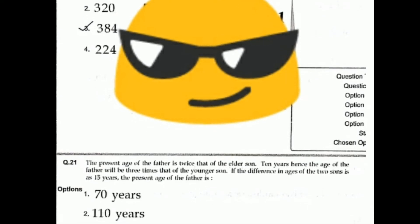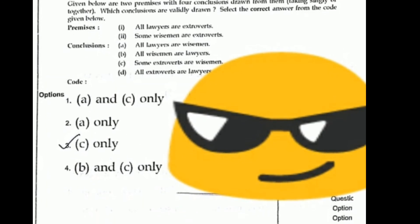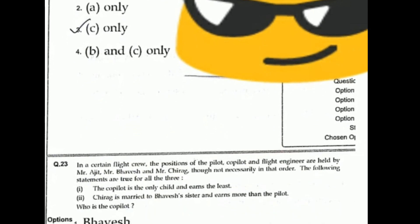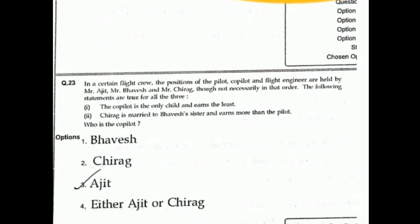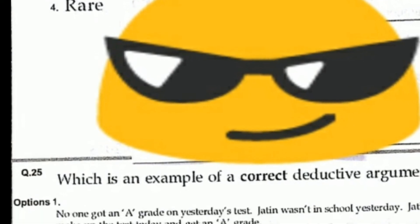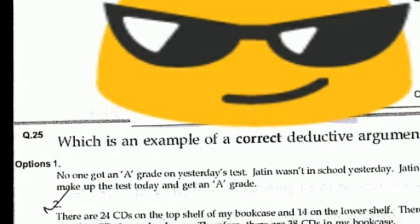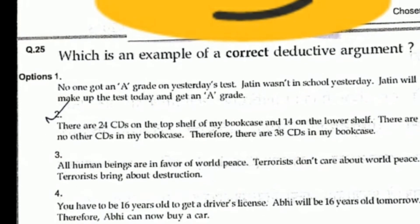For the person's age math problem, the right answer is 50 years. Given two premises, the right answer is only option C. Question 23's right answer is Ajit, option 3. Question 24's right answer is beautiful. Question 25: which is an example of a correct deductive argument — option 2. There are 24 series; this is the right answer.